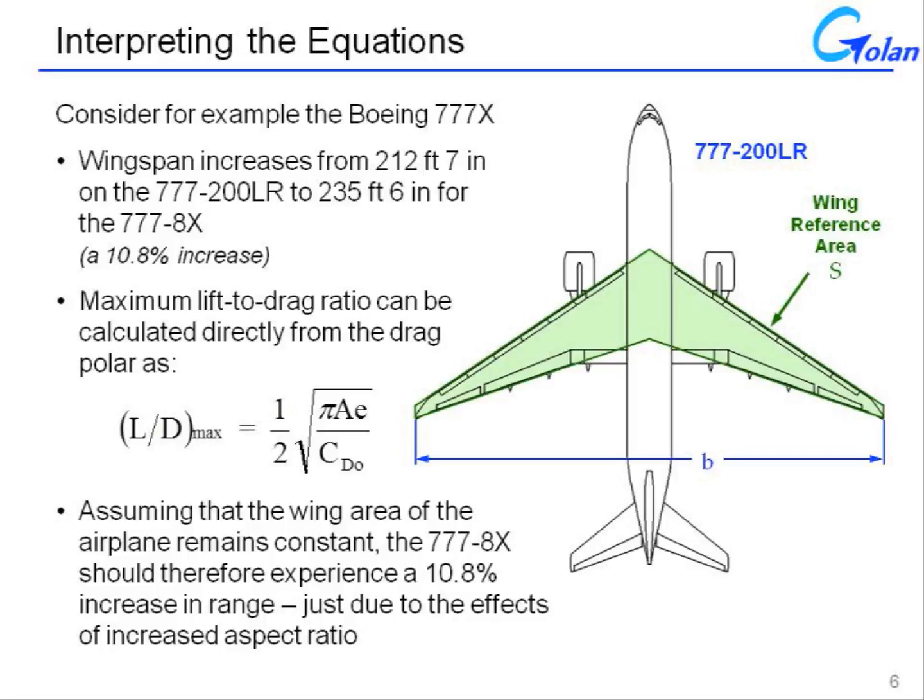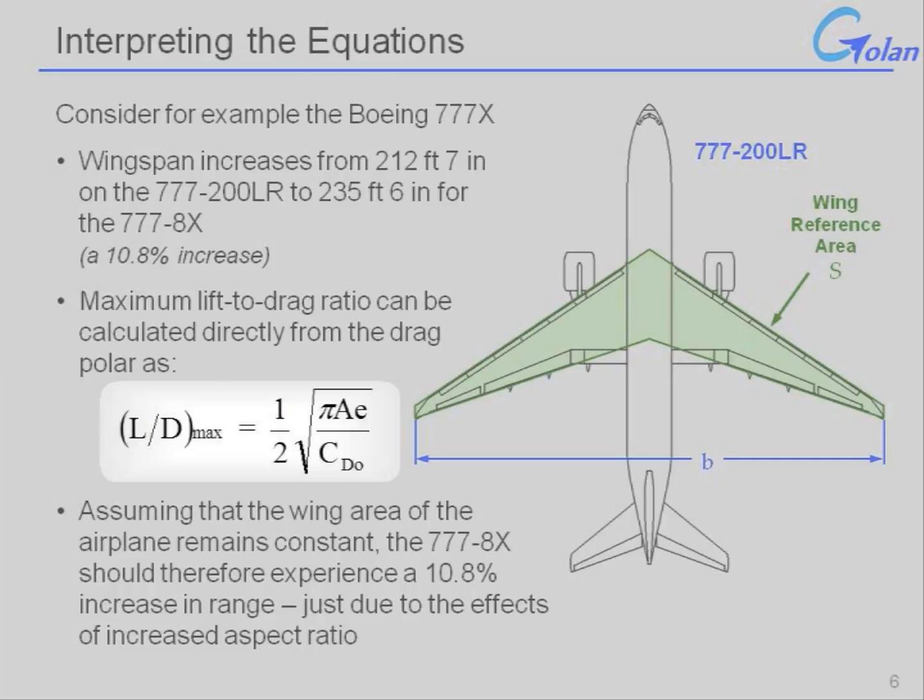We saw in the foregoing relationships that the range of an aircraft is directly proportional to the lift-to-drag ratio at cruise. So the maximum lift-to-drag ratio of an aircraft can be related back to the components of the drag polar by the relationship that you see here. This relates lift-to-drag back to the aspect ratio, Oswald's efficiency, and the parasitic-drag coefficient.